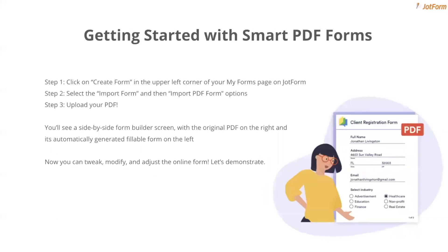To get started, it's really pretty easy. All you have to do is click on Create Form on the top left of your My Forms page, just like you're starting any other form. Then you choose Import Form and Import PDF Form right after that, and you'll get to upload your PDF. The tool will scan your file and create a form based off your PDF, showing the original PDF on the right and the correlated form it just generated side-by-side on the left. Then you can check everything looks in order and make any adjustments before sharing it. Always easier to visualize, so we'll go ahead and take you to a live demo. For that, I'll pass it over to my colleague, Chad.